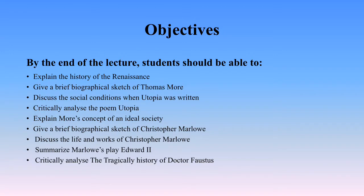Objectives: By the end of the lecture, students should be able to explain the history of the Renaissance, give a brief biographical sketch of Thomas More, discover the social conditions when Utopia was written, critically analyze Utopia, explain More's concept of an ideal society, give a brief biographical sketch of Christopher Marlowe, discuss the life and works of Christopher Marlowe, summarize Marlowe's play Edward II, and critically analyze the tragical history of Dr. Faustus.